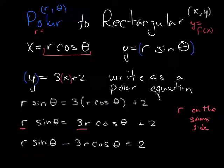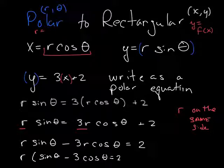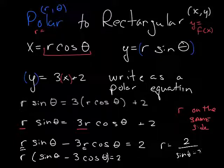I need to solve for this. What am I going to do? Factor out the R. Then I'm left with sine of theta minus 3 cosine of theta is equal to 2. What I did there is I just factored out the greatest common factor of the R.